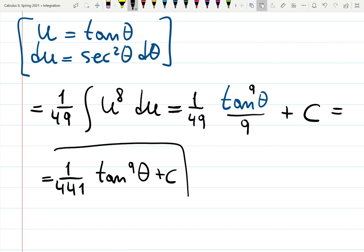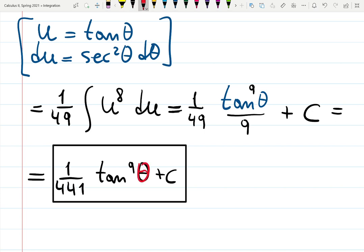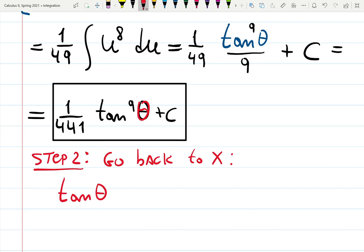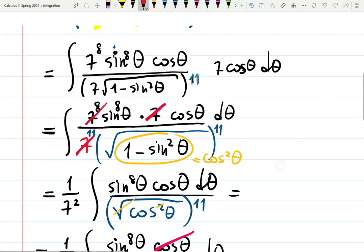This is the answer of the integral. So as you can see we found the answer. However, if you remember we started with x and somehow we have the answer in terms of theta. That means we need to perform the extra step. The extra step is when we need to actually go back to the x notation. So let's call it step 2: go back to x notation. And in this case we are wondering what is tangent theta.